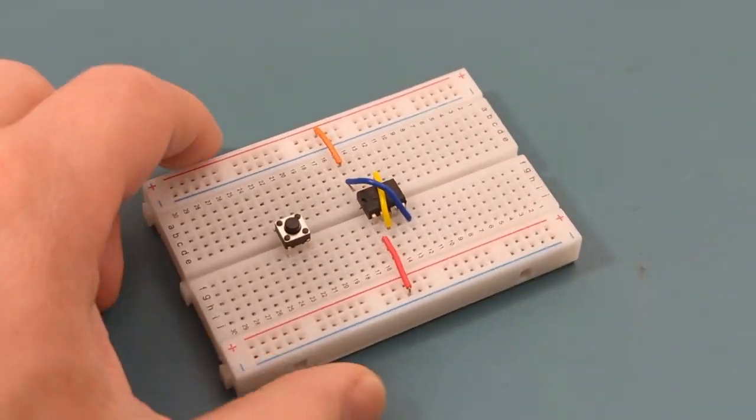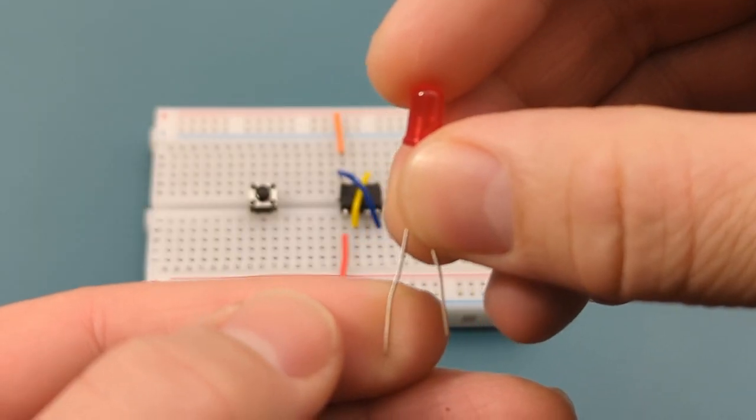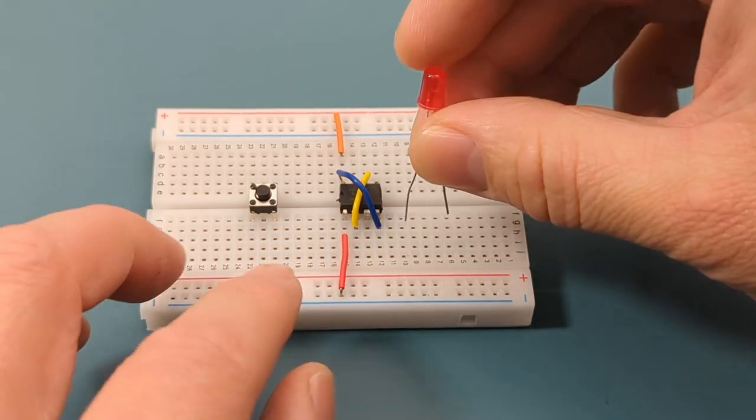Turn the breadboard to the side. Connect a red LED to pin three or output with the positive leg attached to pin three.